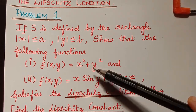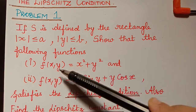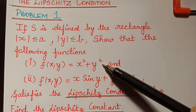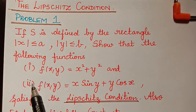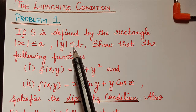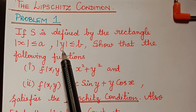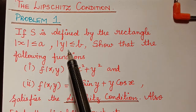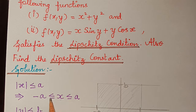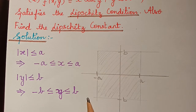We have two different functions, so let us do them separately. First we will consider f(x,y) = x² + y² and check whether this function satisfies the Lipschitz condition, then find the Lipschitz constant. The functions are defined in region S where modulus of x ≤ a means x lies between −a and +a, and modulus of y ≤ b means y lies between −b and +b.